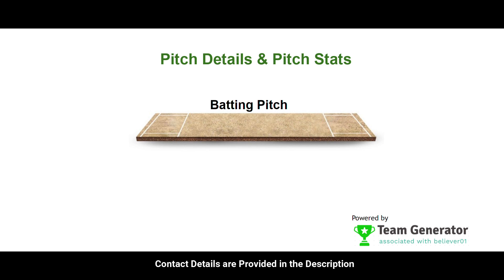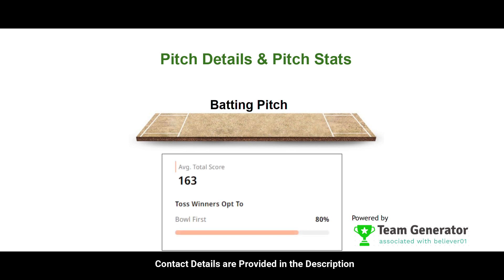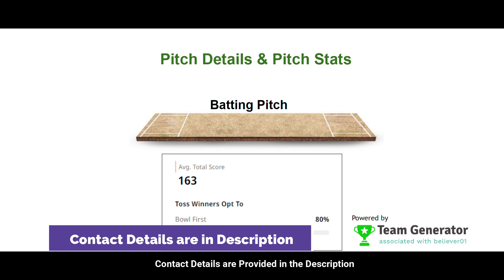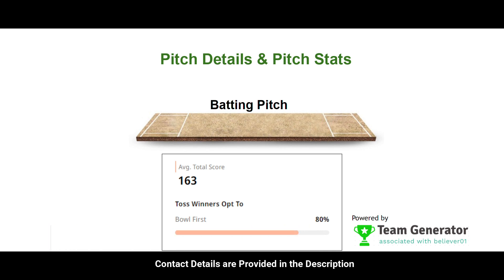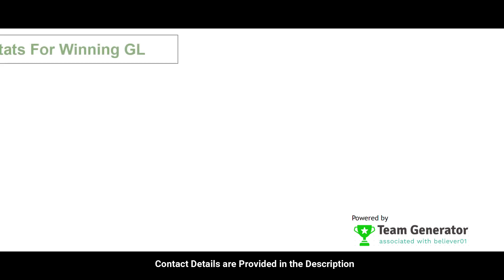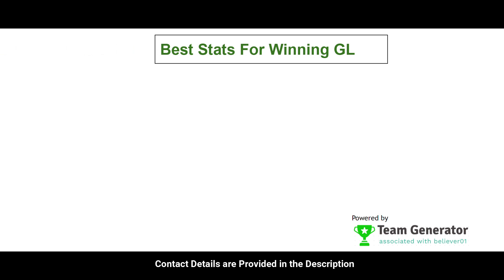Now let's look at the pitch details. The pitch will be a batting pitch, meaning there will be a lot more runs. The total average score will be around 163, so we can expect anything around 320-plus runs out of 40 overs. It is more of a batting pitch, slightly near to balanced.